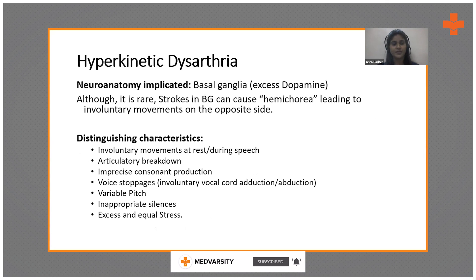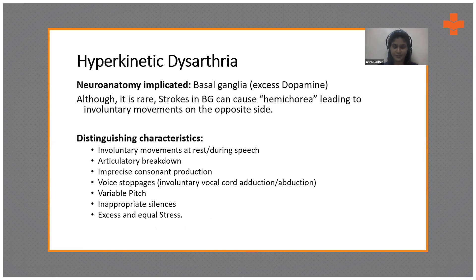Hyperkinetic dysarthria is caused by damage to the basal ganglia, but again a single stroke cannot cause hyperkinetic dysarthria — it is very rare. The distinguishing characteristics include involuntary movements at rest and during speech, articulatory breakdowns, imprecise consonant reduction, voice stoppages, variable pitch, inappropriate silences, and excess and equal stress.